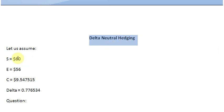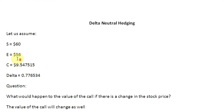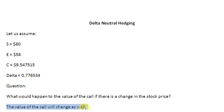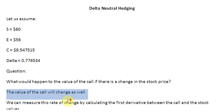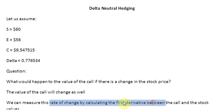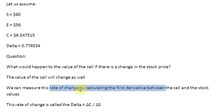Let us assume a stock with a price of $60 at the moment, and on this stock we have a call option with an exercise price of $56. The value of this call is $9.547515, and we have a delta on this call option equal to 0.776534. The delta is the first derivative of the call value with respect to the stock value, and that is the value which we see here.